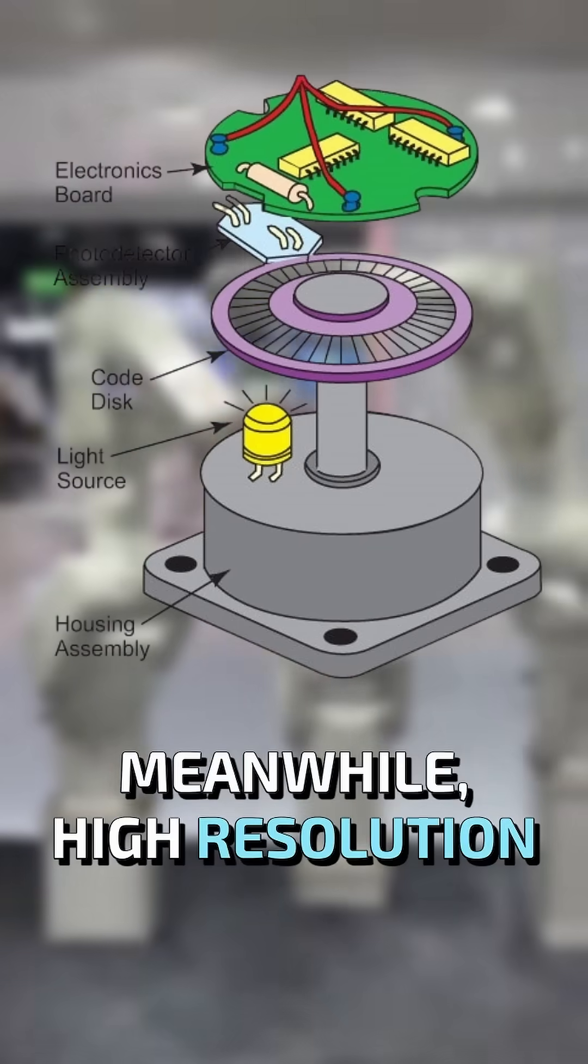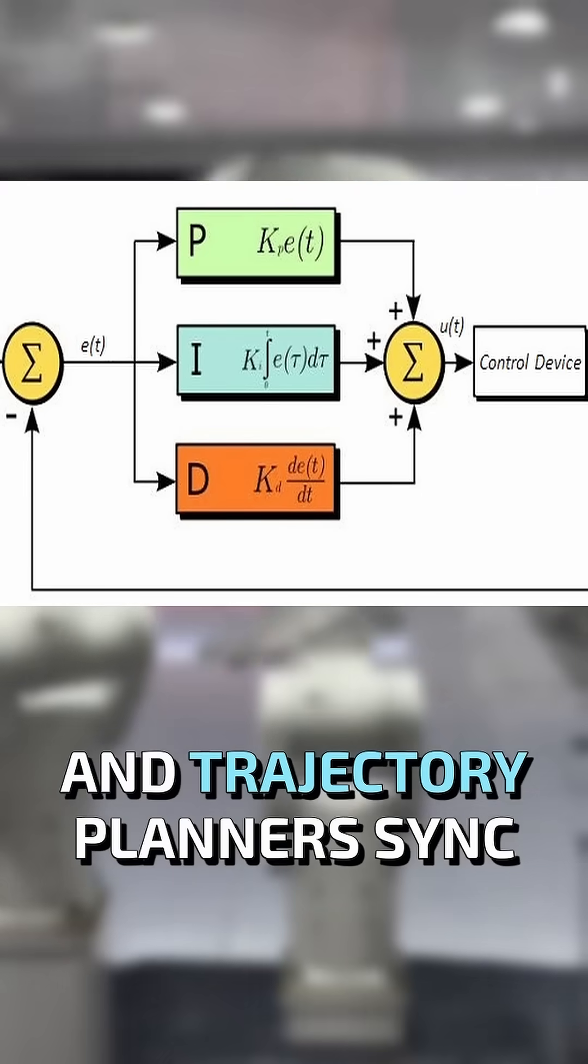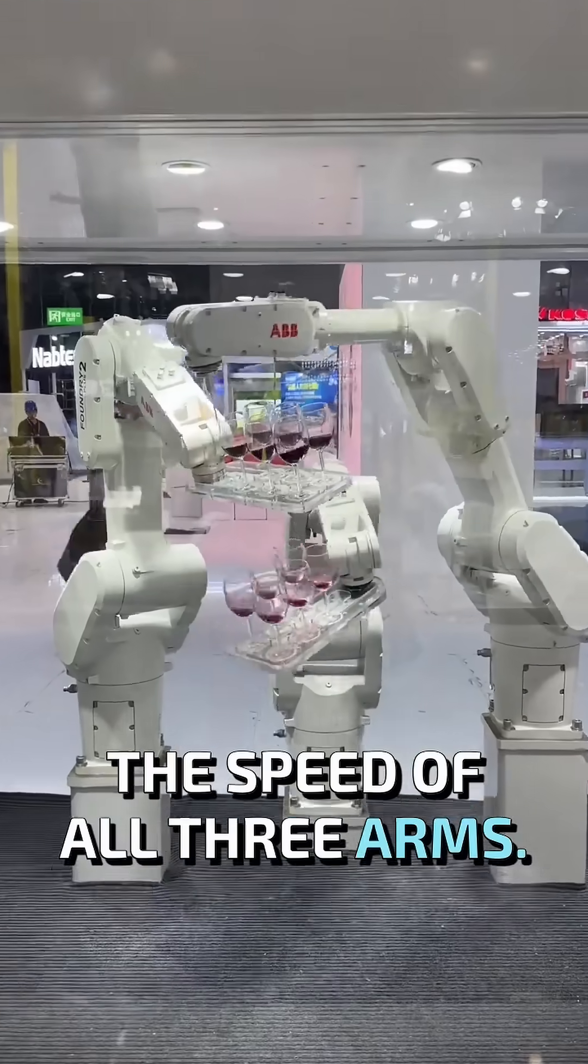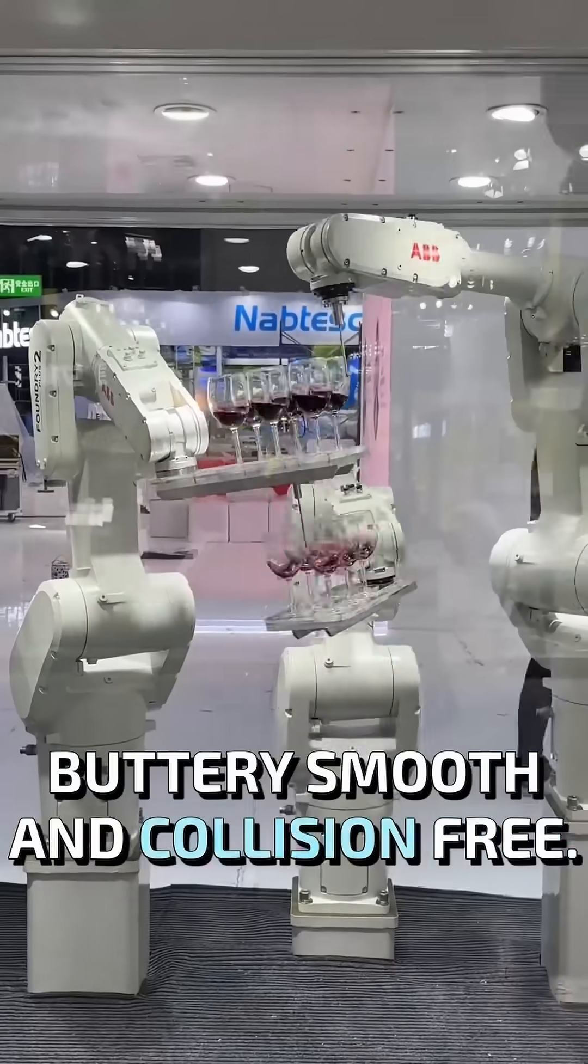Meanwhile, high-resolution encoders track every rotation, PID controllers kill micro-errors, and trajectory planners sync the speed of all three arms. Even latency and vibration are compensated, keeping motion buttery smooth and collision-free.